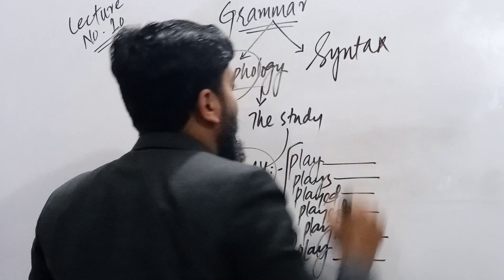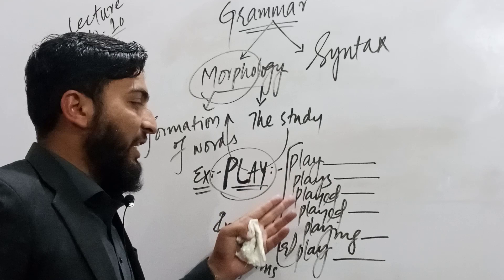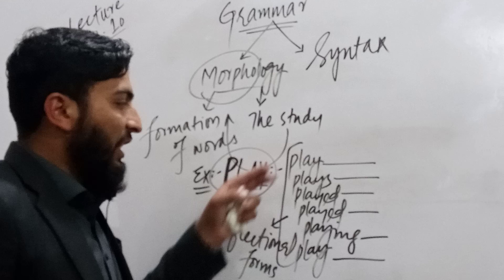Morphology is defined as the study of the formation of words. For example, 'play' is a lexeme from which we make six words: play, plays, played, playing. These are six inflectional forms — or inflected words — made from the lexeme 'play.' This formation of words is called morphology.